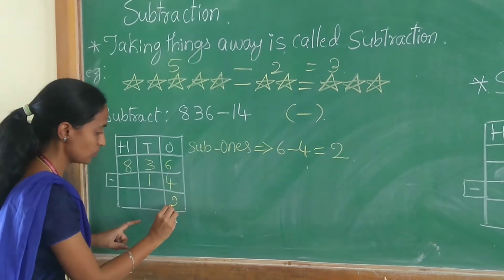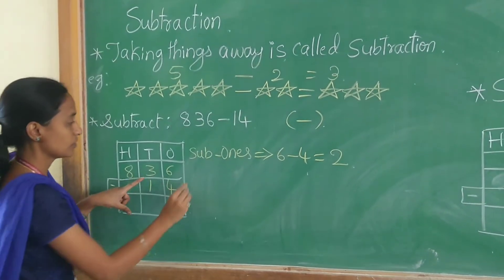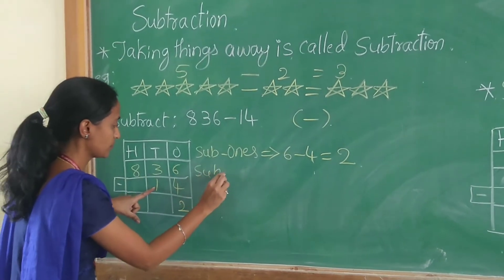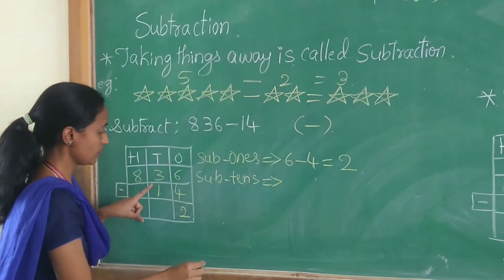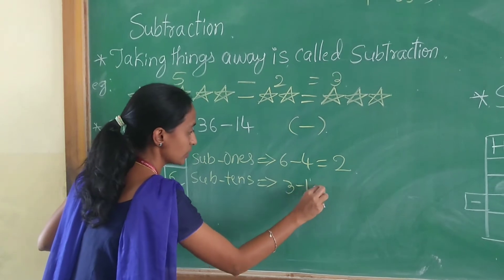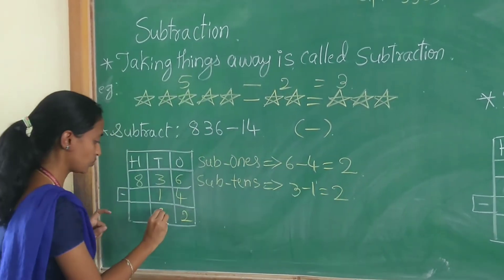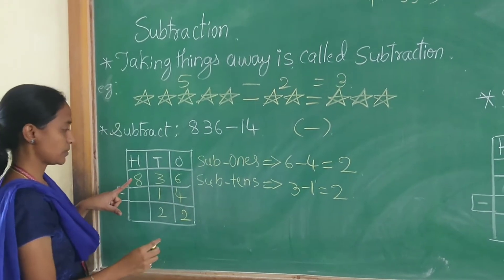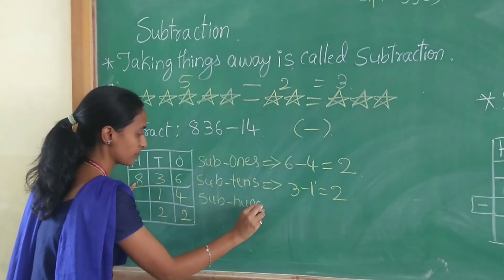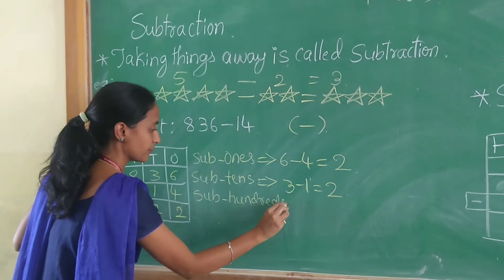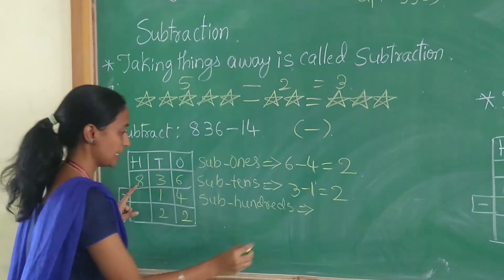Subtract 1s. That is 6 minus 4 is equal to 2. Subtract 10s. That is 3 minus 1 is equal to 2. Then subtract 100s.